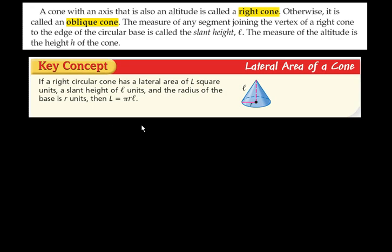Lateral area of the cone, if you just want the lateral area. A right circular cone has a lateral area of L square units, a slant height of ℓ units and a radius of the base, r units. Then the lateral area, L, is just π times r times ℓ. So you've got to figure out the radius, you've got to figure out the slant height, and then that will tell you the lateral area of the cone if you just multiply π times r times ℓ.